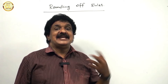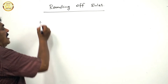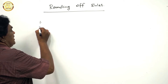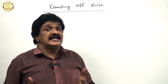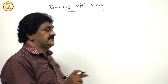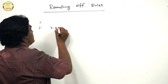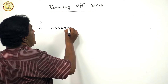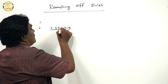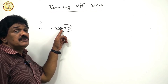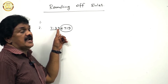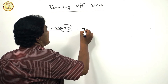Rules for rounding of a number. First rule: all the digits to be removed are taken together, not one by one, but taken together. Second rule: if the leftmost digit to be removed is greater than 5, then the last digit to be retained is increased by 1. For example, 7.336719 — we want to retain 7.33 and remove 6719. The leftmost digit to be removed is 6, which is greater than 5, so this can be rounded off as 7.34.